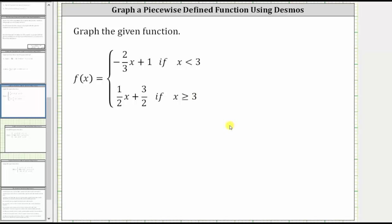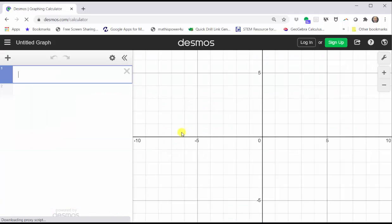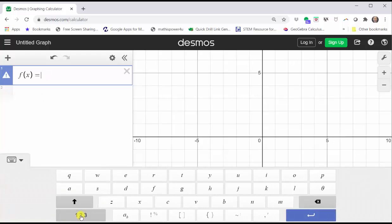To begin, go to desmos.com and click Graphing Calculator. Next, we enter f(x) equals, and now we need curly brackets or squiggly brackets. Using the desmos keypad, click Show Keypad, click ABC.